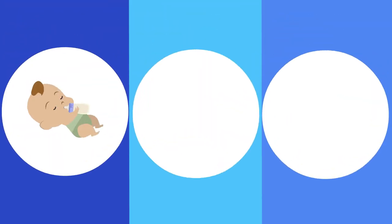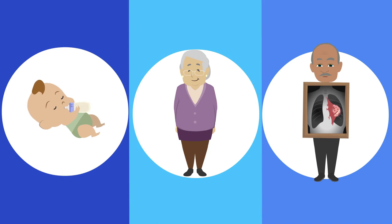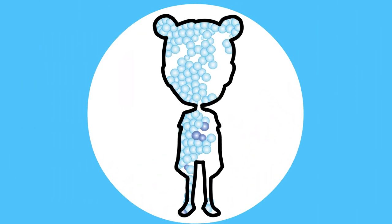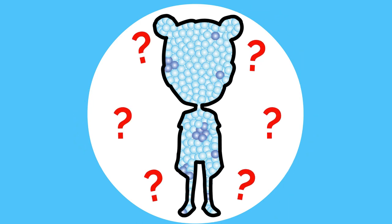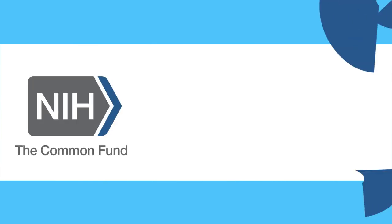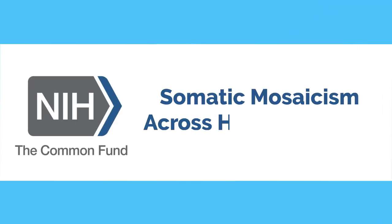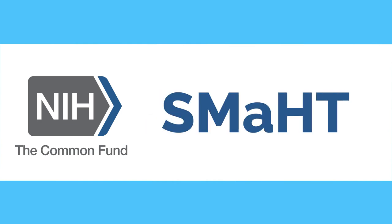We know that somatic mosaicism can affect fetal development, aging, and can lead to cancer. But we don't know how extensive somatic mosaicism is in the cells throughout our bodies, or its full impact on human biology and disease. That's why the NIH Common Fund created the Somatic Mosaicism Across Human Tissues Network, or SMAHТ Network.